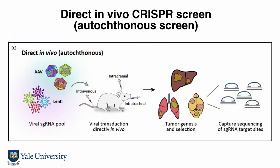The approach we're using is direct in vivo CRISPR screens, or what we call autochthonous screens in the tumor modeling field. This is a tough job because you have to put all the viruses or gene editing compounds directly into the healthy animal and knock out, perturb, or mutate genes in vivo. You can do this to the lung, brain, liver, or any organ you want. Then you watch for tumorigenesis in these healthy animals as they become diseased, take them down, and sequence them.